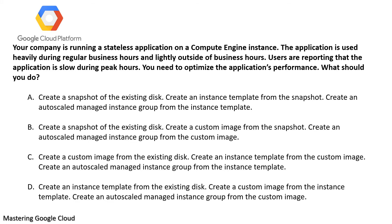Create an instance template from that disk, then create the auto-scale managed instance group. That looks correct. Option D says create an instance template from the existing disk and create the auto-scale managed instance group. But we know that the auto-scale managed instance group is created from the template, and that process is incorrect as described. So option C is the right answer.